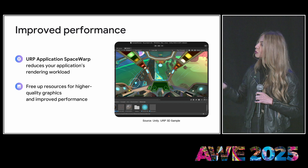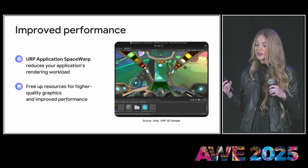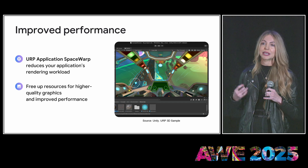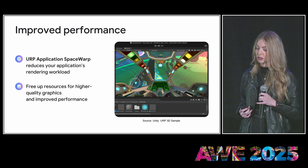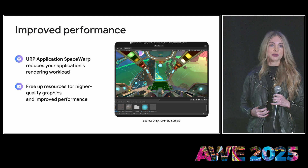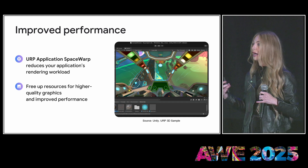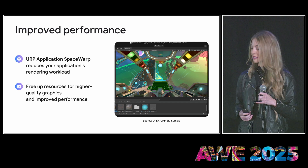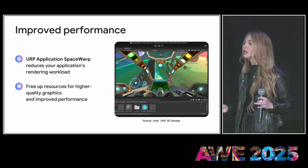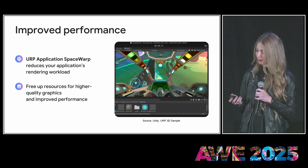In Unity 6, we also introduced URP Space Warp. This is a feature that reduces your application's rendering workload, freeing up resources for higher quality graphics and improved performance. You gain additional compute, meaning you can do even more with your render budget.